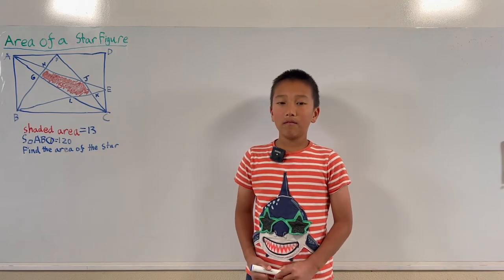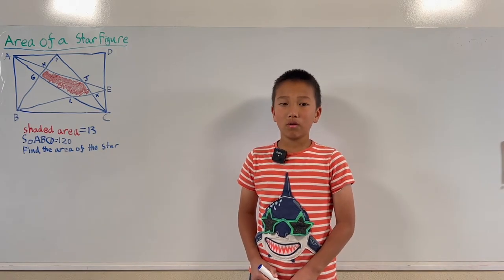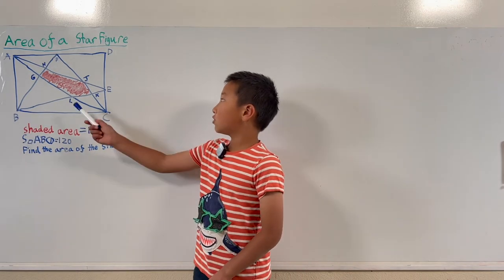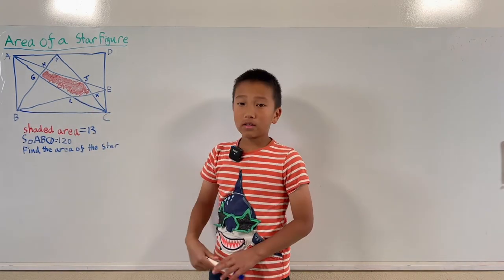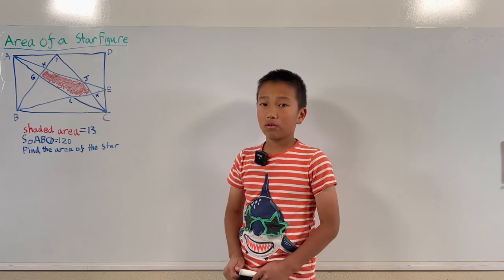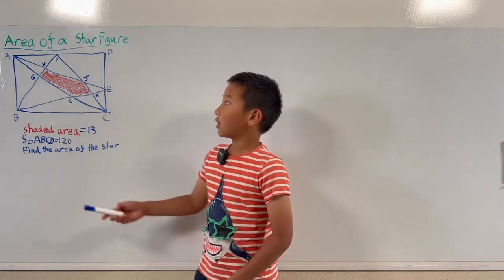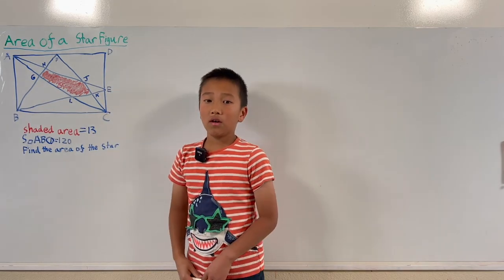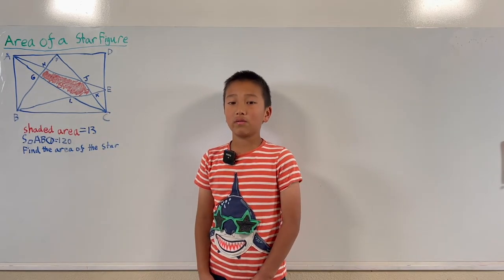Today I will be talking about a very interesting geometry problem. The red shaded area has an area of 13 square units. The area of rectangle ABCD has an area of 120 square units.